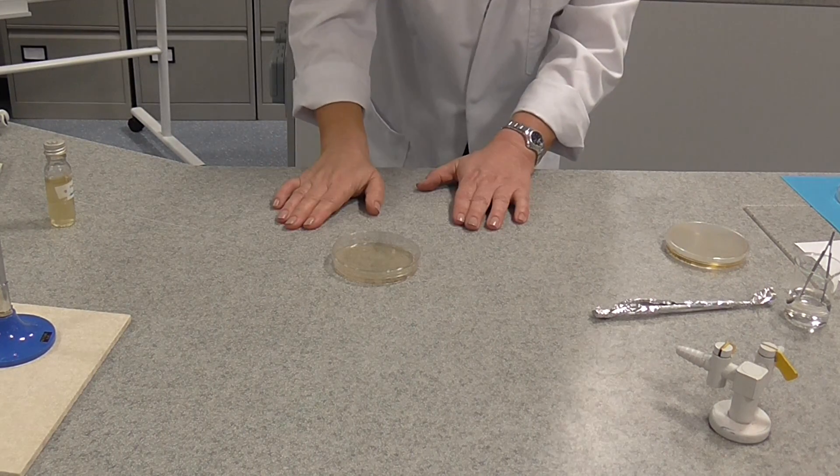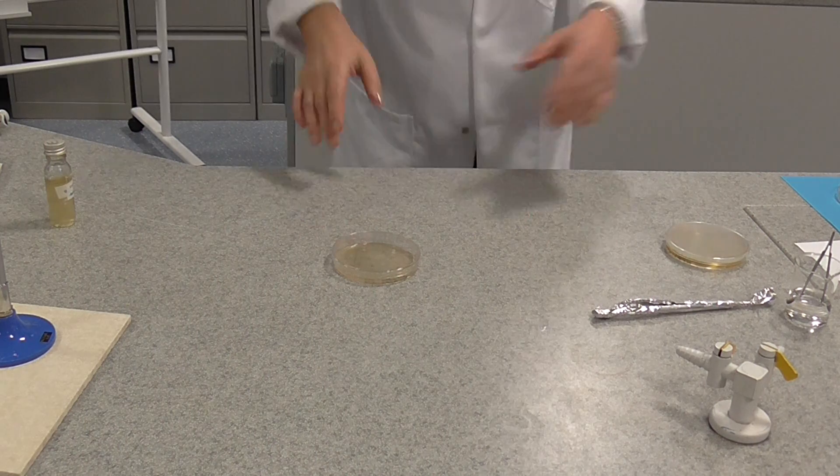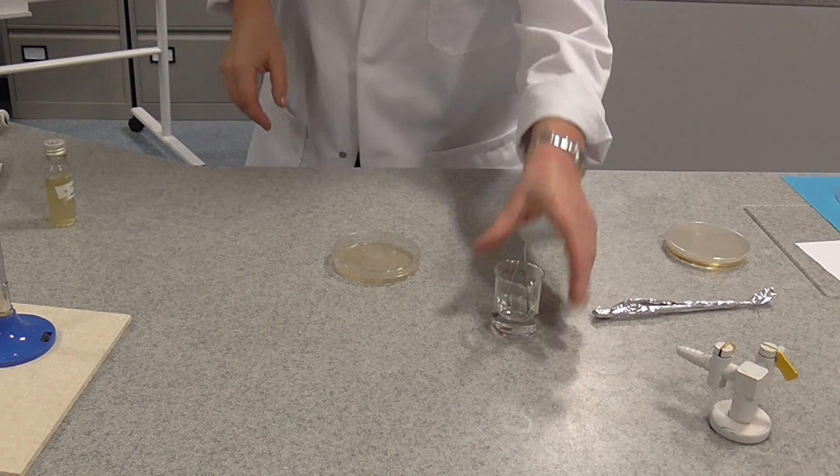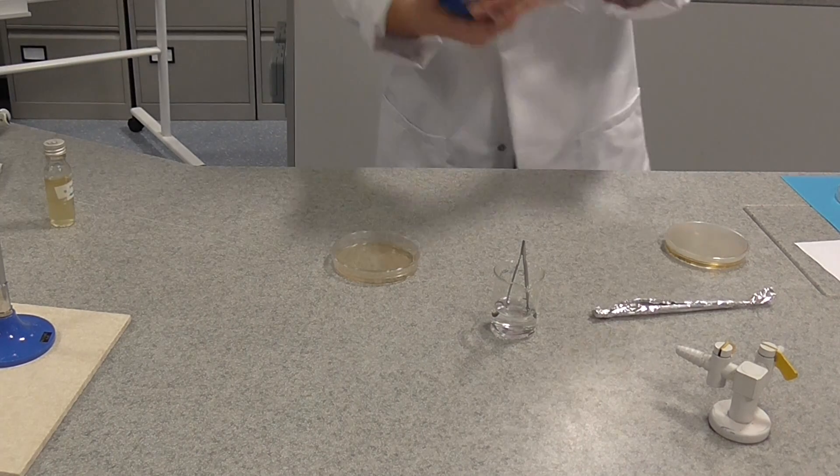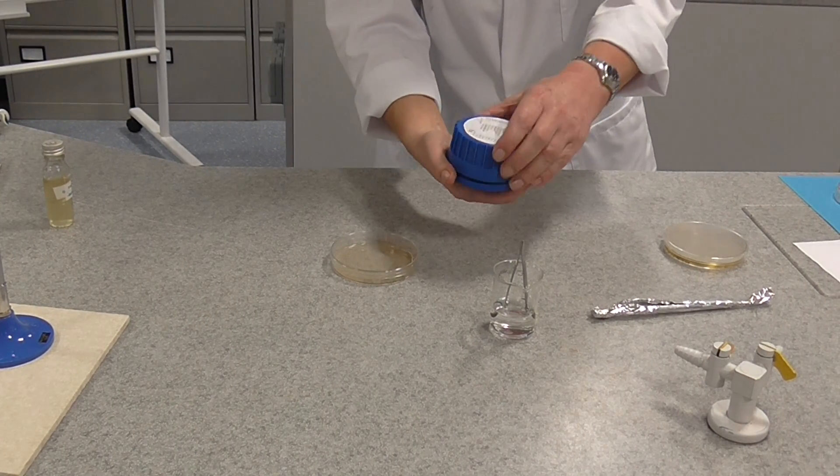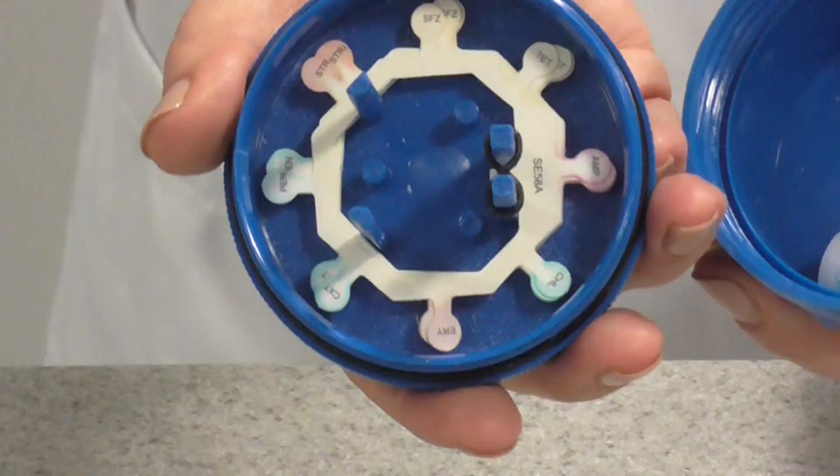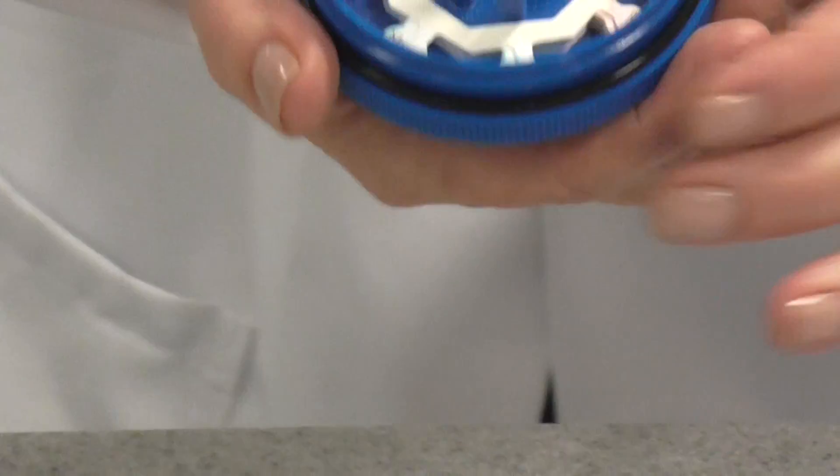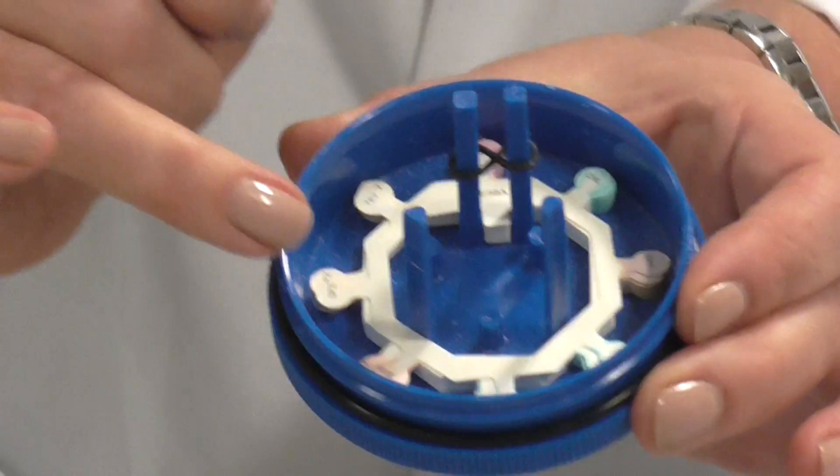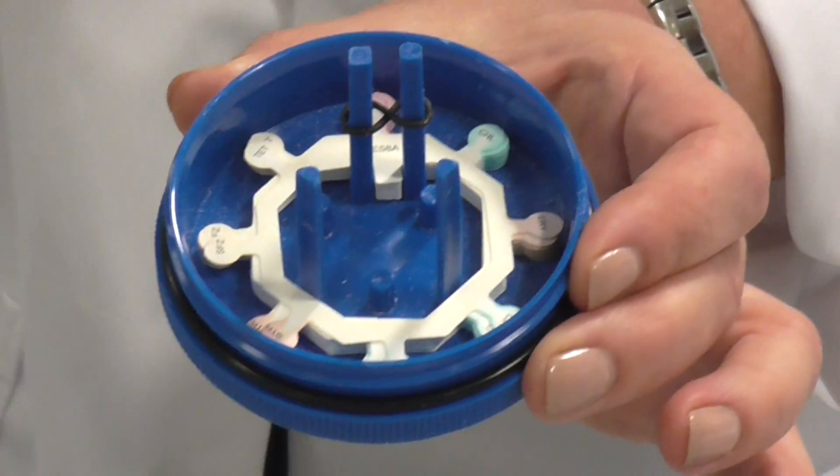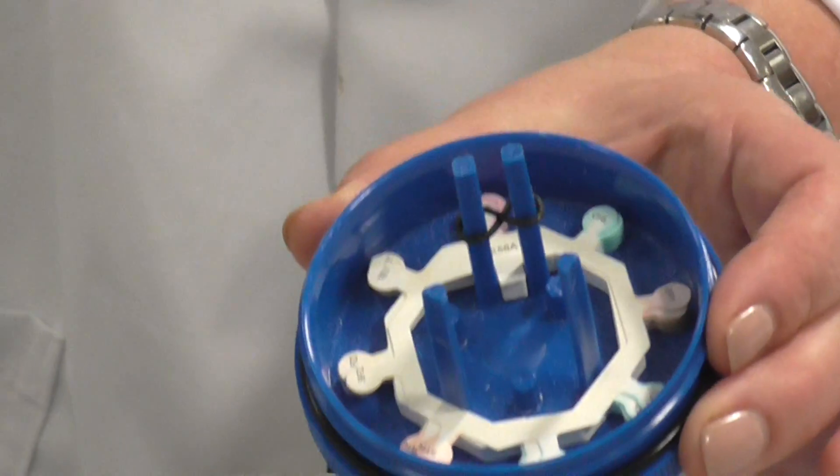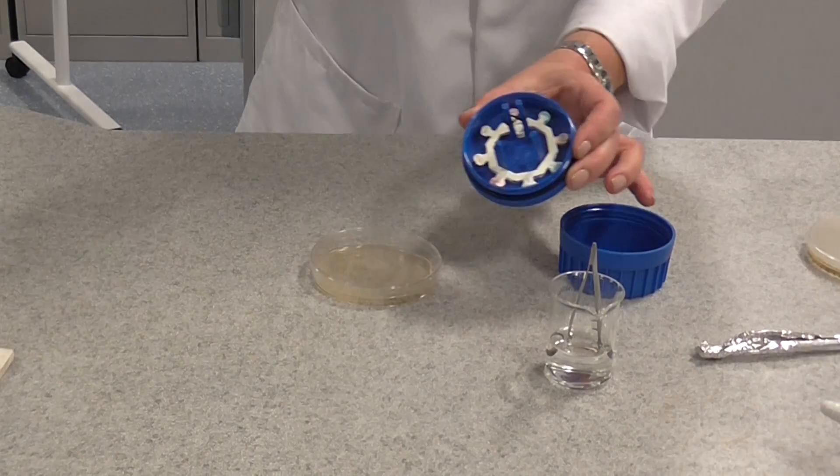When this grows, we'll get what's called a bacterial lawn. The next thing I'm going to do, I'm going to actually transfer an antibiotic test disc. If you have a look here, this is what they look like. You can see it's actually a piece of filter paper with little circles on, little discs. And each disc is impregnated with a different antibiotic.